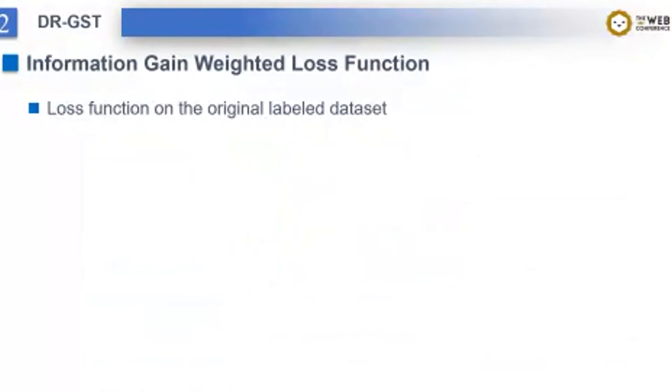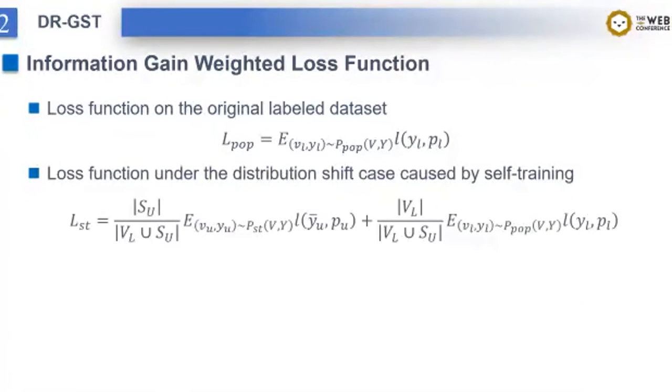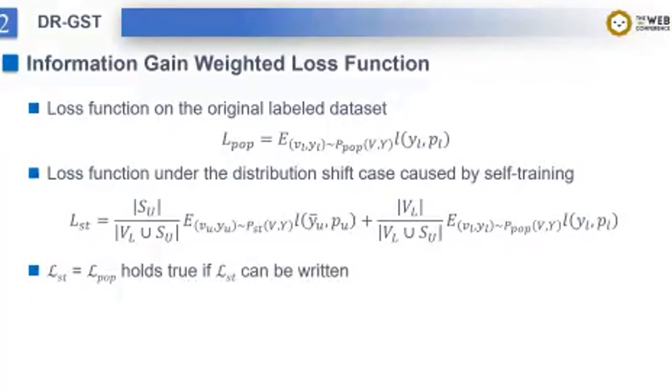We assume the original labeled dataset follows the population distribution. Firstly, let's write the loss function on the original labeled dataset. Then, the loss function and the distribution shift caused by self-training is as follows. The first term is for pseudo labeled data, while the second term is for labeled data. We expect the distribution shift doesn't exist. In other words, we expect L_ST equal to L_POP.